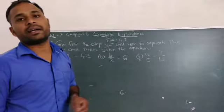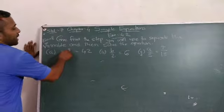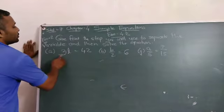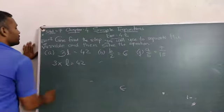Here we want to find a variable. Here, variable is l. So, 3 and l are in the relation of multiplication.